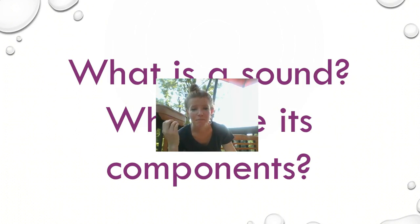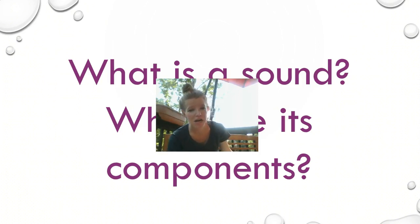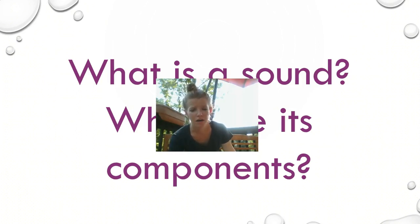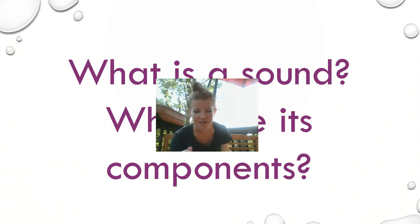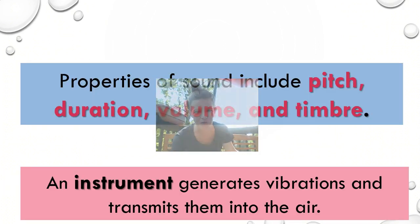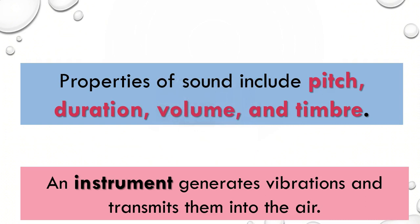And I didn't sing just any volume — it had a specific dynamic level or volume. And number four: it has timbre. Timbre is the quality of sound. I didn't have that vibrato, that weird 'wah wah wah' sound — it had a specific timbre or quality to my sound. So those are the four components of a sound: pitch, duration, volume, and timbre.